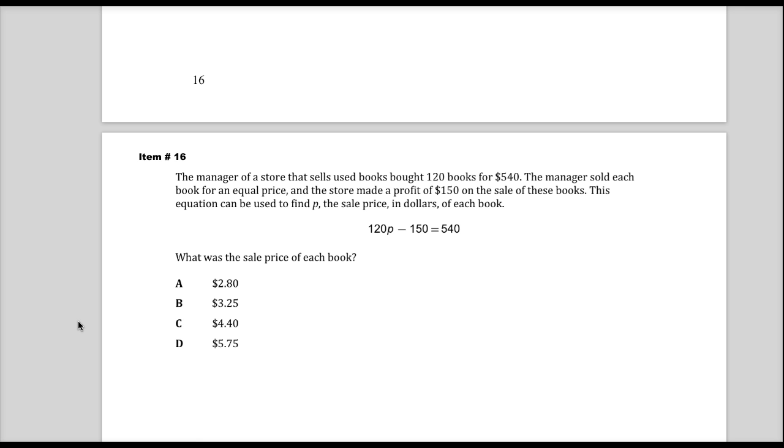The manager sold each book for an equal price, so every book that they bought, they sold out from their store for the same price. And the store made a profit, so more than they bought them for, of $150 on the sale of books. This equation can be used to find P, the sale price in dollars of each book. They show you the equation and it's blocked off like that, you're probably going to just use the equation and then solve it.